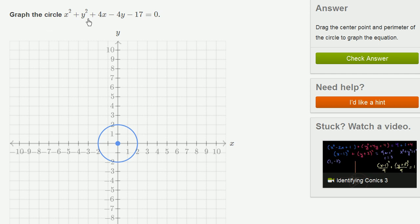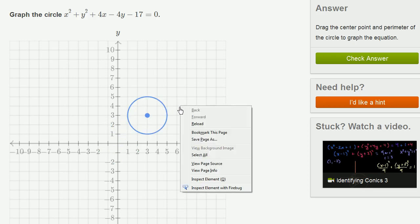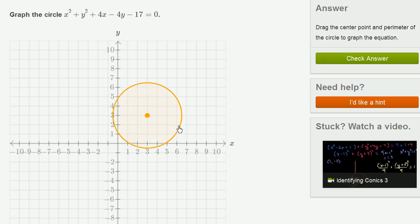We're asked to graph the circle, and they give us this somewhat crazy-looking equation. To graph a circle, you have to know where its center is and you have to know what its radius is. So what we need to do is put this in some form where we can pick out its center and its radius.